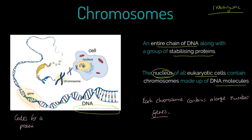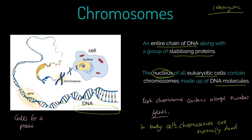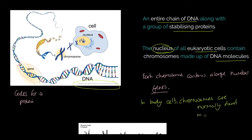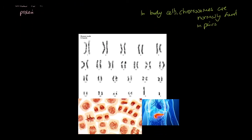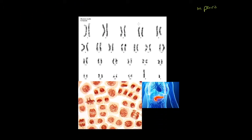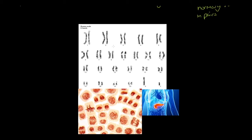In body cells, chromosomes are normally found in pairs. Looking at this illustration — the human karyotype — what we have is 22 pairs plus the sex chromosomes, either XX or XY, which we'll study in another tutorial. They've been arranged from the largest pair to the smallest pair.